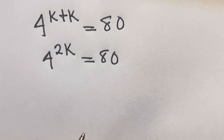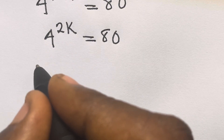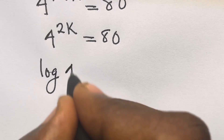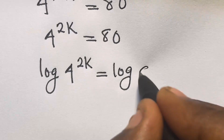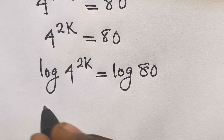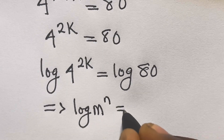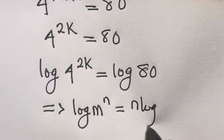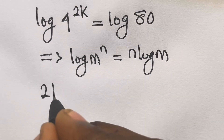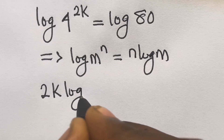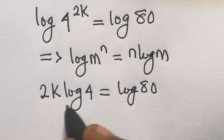From here, we can easily introduce log to both sides. So if we introduce log to both sides, we have log(4 × 3^(2k)) equals log 80. And we recall that log(m^n) equals n·log m.